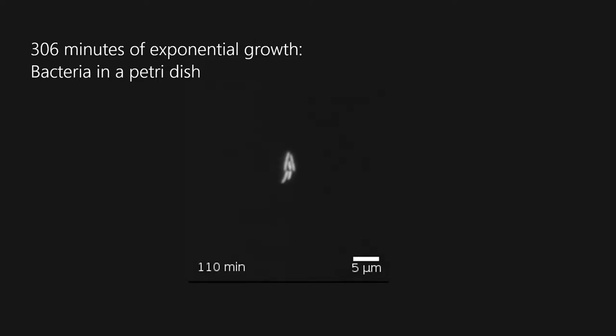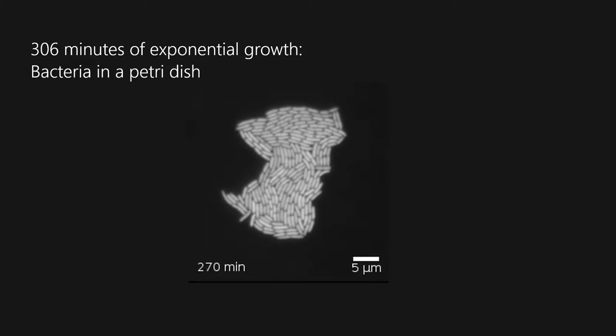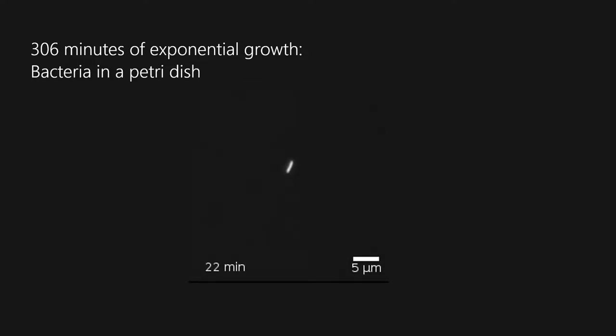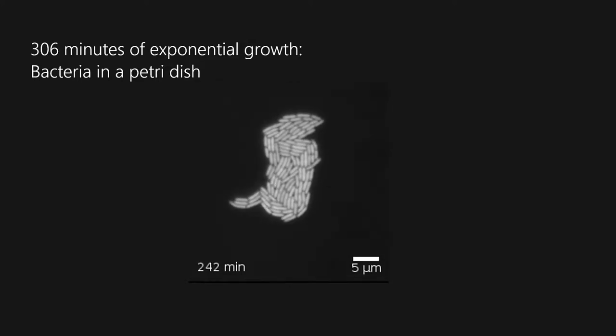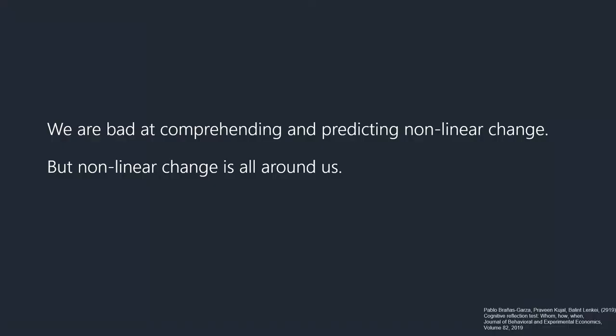This is a visual example — cells separating. We're about at half time, still pretty slow. And then there's the acceleration at the end — the whole petri dish is filled with bacteria. The growth is slow initially, slower than linear growth, and very fast later on. We are very bad at comprehending and predicting non-linear change. Hidalgo mentioned this morning that climate scientists keep being surprised by rapid changes in the climate system — that's an example of exactly this.